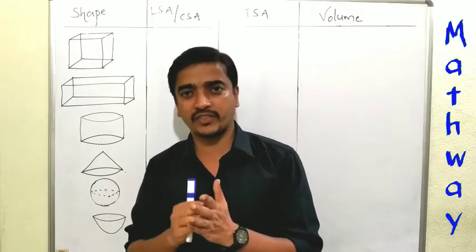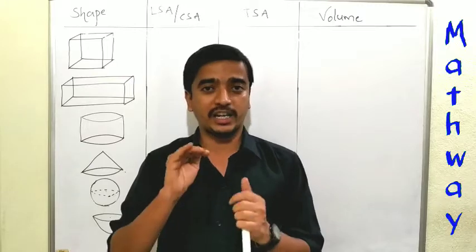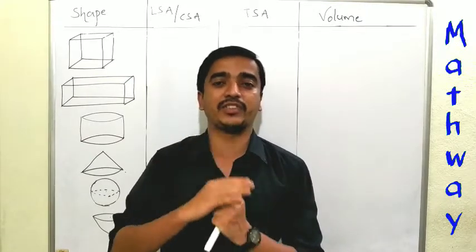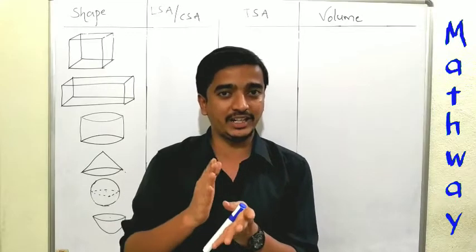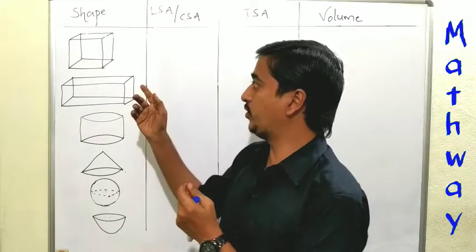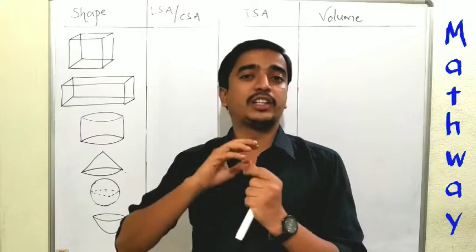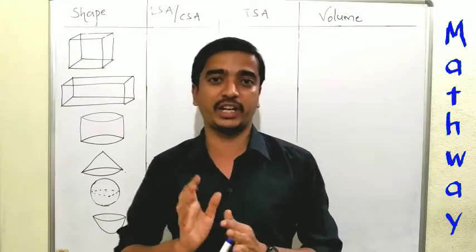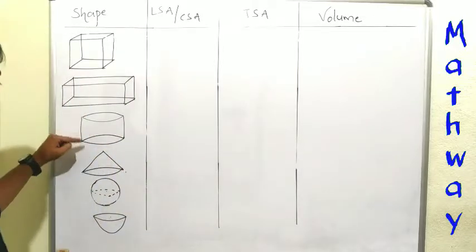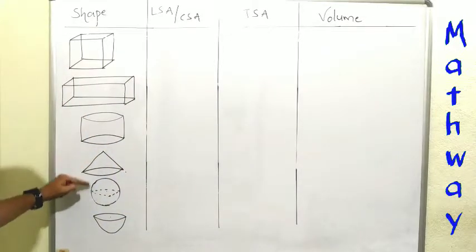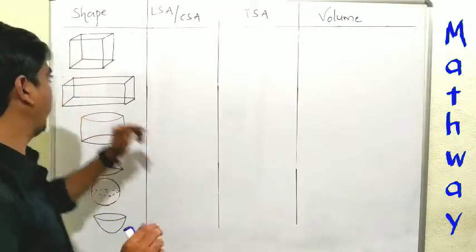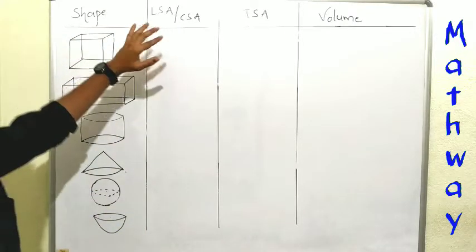Lateral surface area and curved surface area both are same. Lateral surface area we use for the shapes which have sides. The shapes which have curved surfaces, for those shapes we use curved surface area. So here, cylinder, cone, sphere, hemisphere we can call it as curved surface area. For the cube, we use lateral surface area.